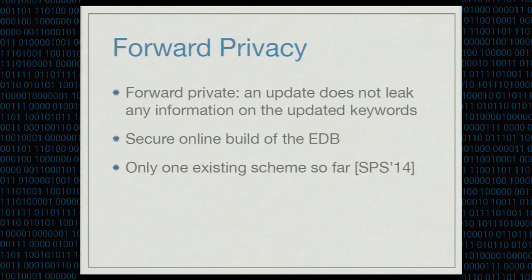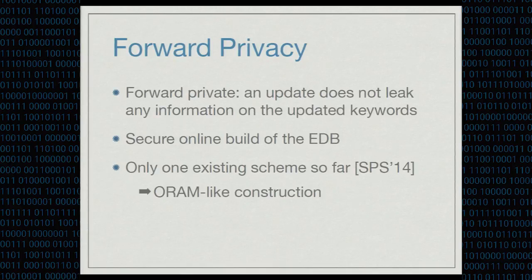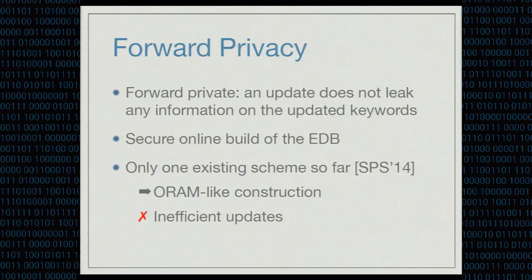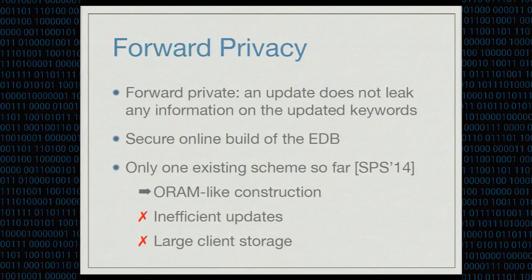There was an existing scheme by Stefanov et al., presented about three years ago at NDSS. This scheme is based on oblivious RAM, and because of that, it shares some inefficiencies — in particular for updates, it needs log squared N operations, involving not just computation but also communication, which is really inefficient if you do many updates. It also needs large transient client storage to do the shuffling step, based on hierarchical ORAM, essentially requiring polynomial space on the client.